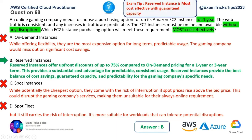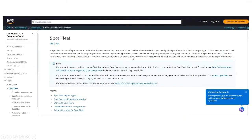Exam tip: whenever you see a requirement that a particular instance is needed for more than a year, go for reserved instances — it's the most cost-effective option with guaranteed capacity. If there is no disruption constraint and only the cheapest option is asked for, spot instances can be up to 90% cheaper than on-demand. But here, because disruption is not tolerable, reserved instances are the answer. Let's move to the next question.